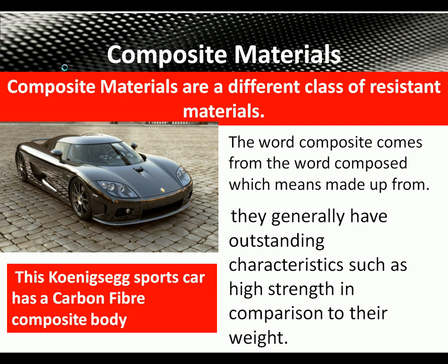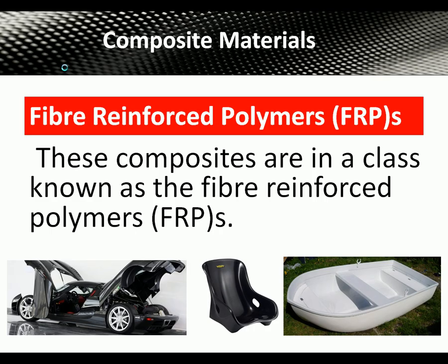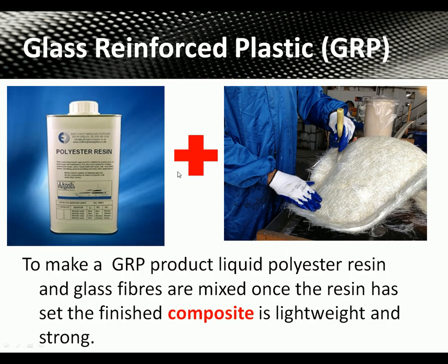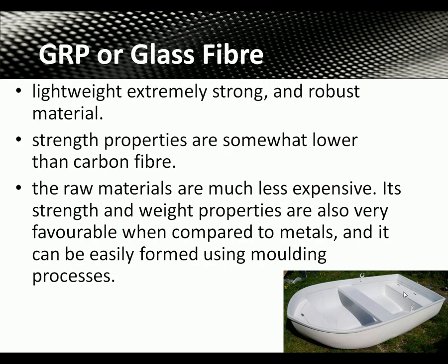The main group of composite materials we're looking at are FRPs — fiber reinforced polymers. We'll look at three of these. The first is GRP, glass reinforced plastic, used for boat hulls and on some sports cars. To make GRP, a liquid polyester resin is mixed or brushed onto glass fibers. When the fibers are saturated, the resin hardens to make a very rigid, lightweight composite product.